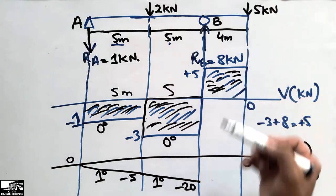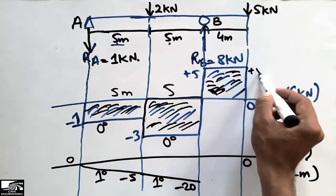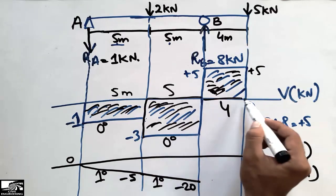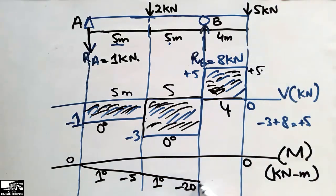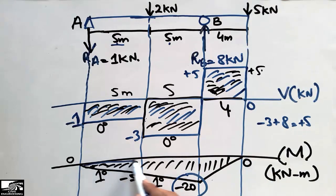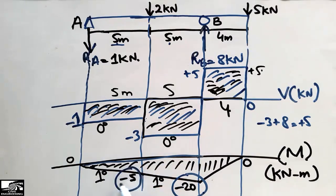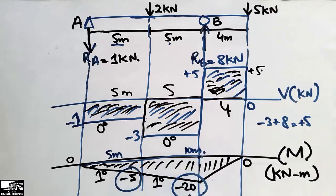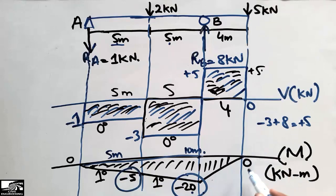The next shear force block is +5 kN with a width of 4 meters, giving an area of +20 kN·m. Adding +20 to −20 gives 0, which checks out at the end of the beam. The bending moment diagram shows a maximum value of −20 kN·m at 10 meters from the left support, a value of −5 kN·m at 5 meters from the left support, and returns to 0 at the free end.